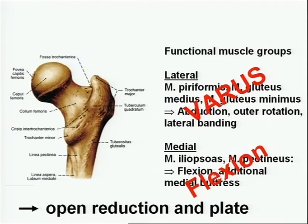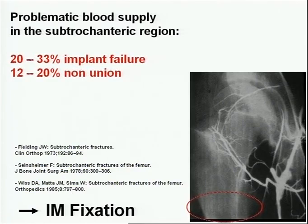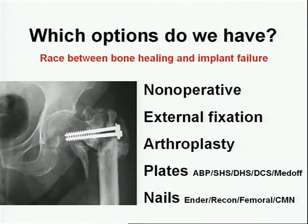If you look at a dislocated short proximal fragment, you might want to perform an open reduction and put a plate on because it makes reduction much easier. But if you consider the blood supply — with a reported risk of 33% implant failure and 20% non-union — you might want to go for a percutaneous approach and IM nailing, because there's nothing left in the blood supply and you don't want to harass that area.